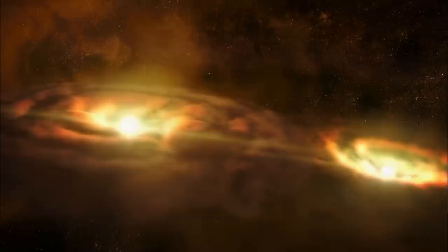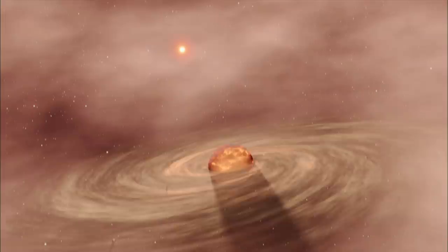The solar system probably formed in a cluster of stars, and so close encounters with nearby stars, nearby rogue planets even, were much more common during the very earliest days of the solar system's formation.